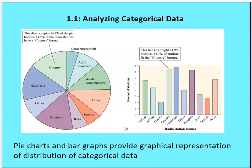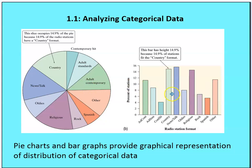Pie charts and bar graphs provide a graphical representation of the distribution of categorical data. We'll talk about when to use one or the other and when it's appropriate. Sometimes you can use both — as shown here with both a bar and a pie chart. Typically, you want to use a pie chart when all categories are related and the totals add up to 100%, but that's not always going to be the case.